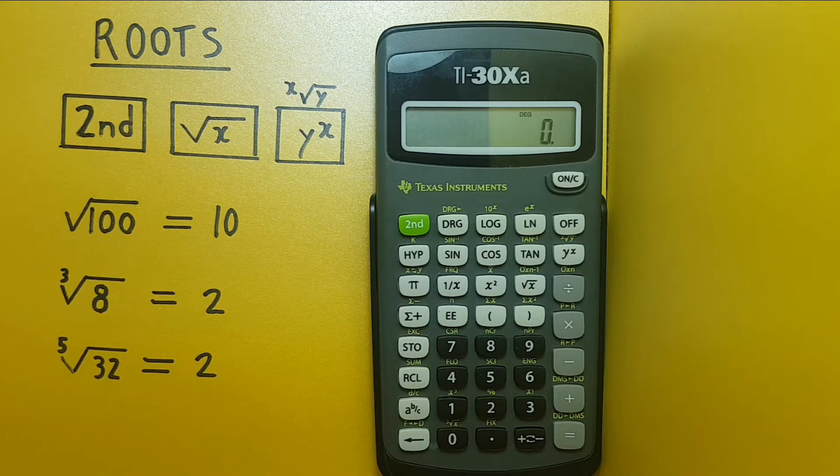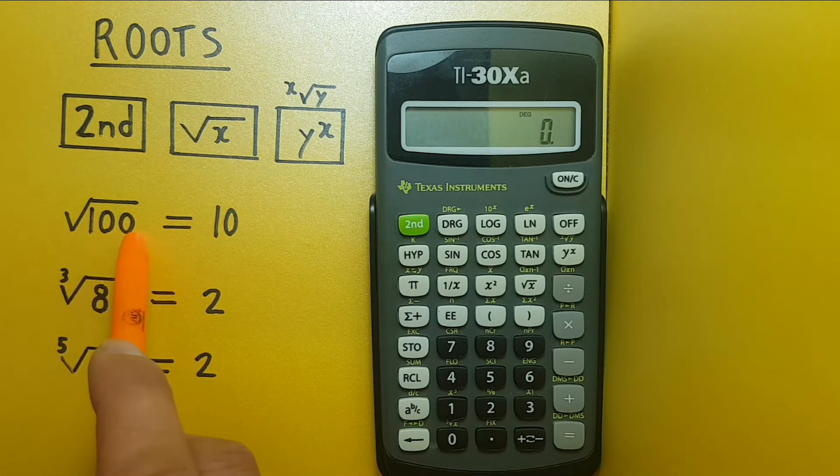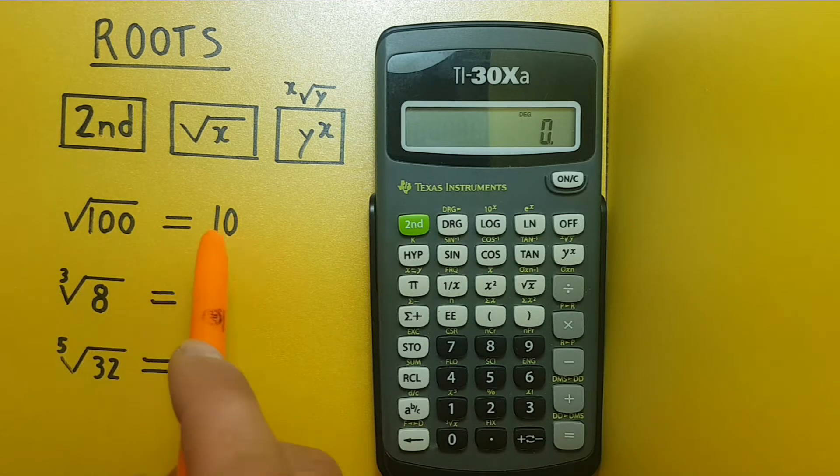All right so let's start with the basic square root. We know that the square root of 100 is 10 because 10 times 10 is 100.